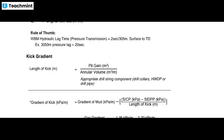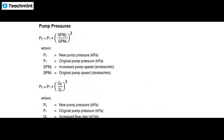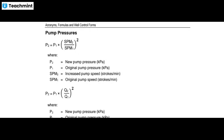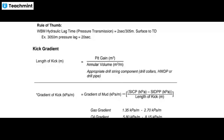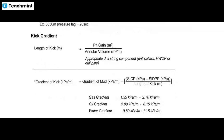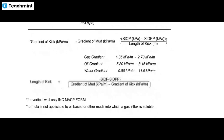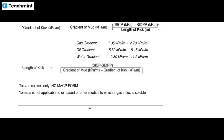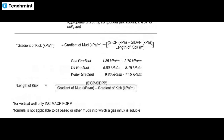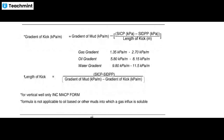For pump pressure calculation: P2 equals P1 multiplied by (SPM2 divided by SPM1) squared. For kick gradient: length of kick equals pit gain divided by annular volume; and length of kick equals (SICP minus SIDPP) divided by (gradient of mud minus gradient of kick). Gas gradient, oil gradient, and water gradient values are also shown.